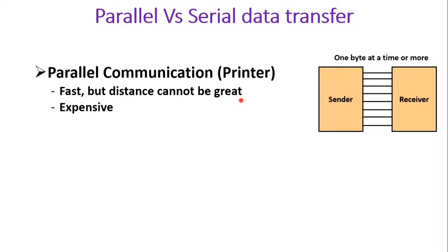But with parallel communication, the distance cannot be great because so many wires are used, and it is quite expensive. If you want to transmit 16 bits of data, 16 wires are required. So it is expensive but fast, and the disadvantage is that distance cannot be great.